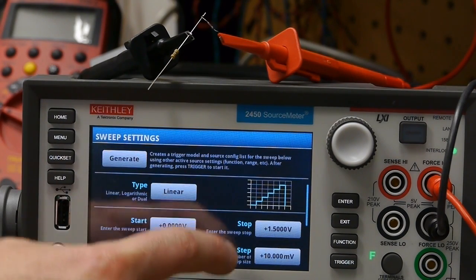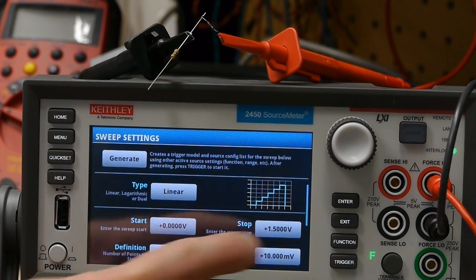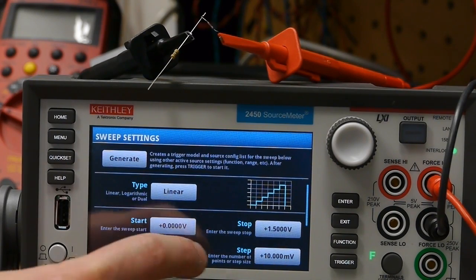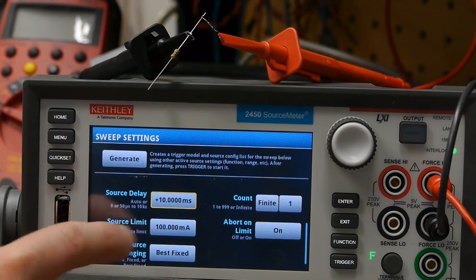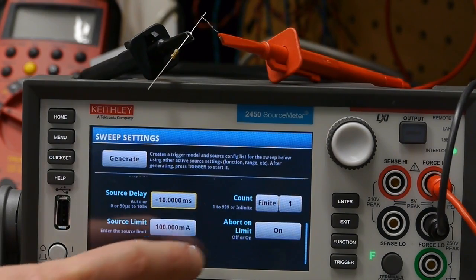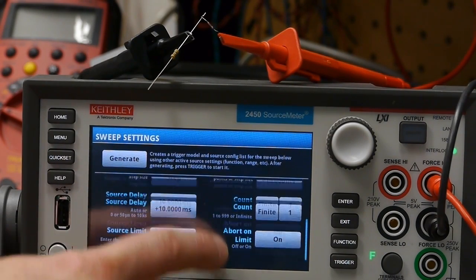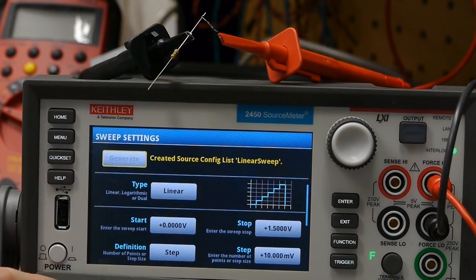We can instruct this thing to generate a voltage sweep, linear, let's say starting at 0 volts and going to 1.5, and it's going to step up and we can set a current limit just to make sure it doesn't blow something up. And so we'll generate all this.